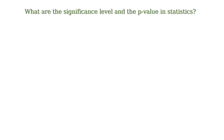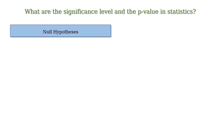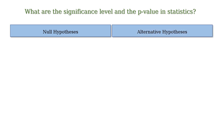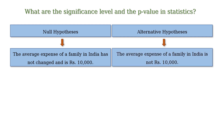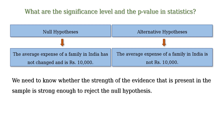So we can state two hypotheses. The null hypothesis will be that the average expense of a family in India has not changed and is Rs 10,000. And the alternative hypothesis is that the average expense of a family in India is not Rs 10,000. So we need to know whether the strength of the evidence present in the sample is strong enough to reject the null hypothesis.